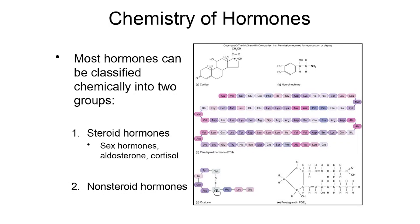Oxytocin is a polypeptide chain, and prostaglandin is another hormone made up largely of a hydrocarbon chain. All of these chemical structures not based off of cholesterol I refer to as non-steroid hormones. They are water-soluble, so they get into the blood and are perfectly comfortable in a watery environment. So non-steroid hormones include everything besides the sex hormones, aldosterone, and cortisol.